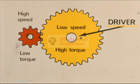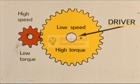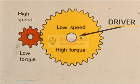This example shows a reverse of the last situation. The driver is now coupled to the shaft with the large gear. This means that the low speed and high torque of the large gear will now become high speed and low torque when transferred to the small gear.